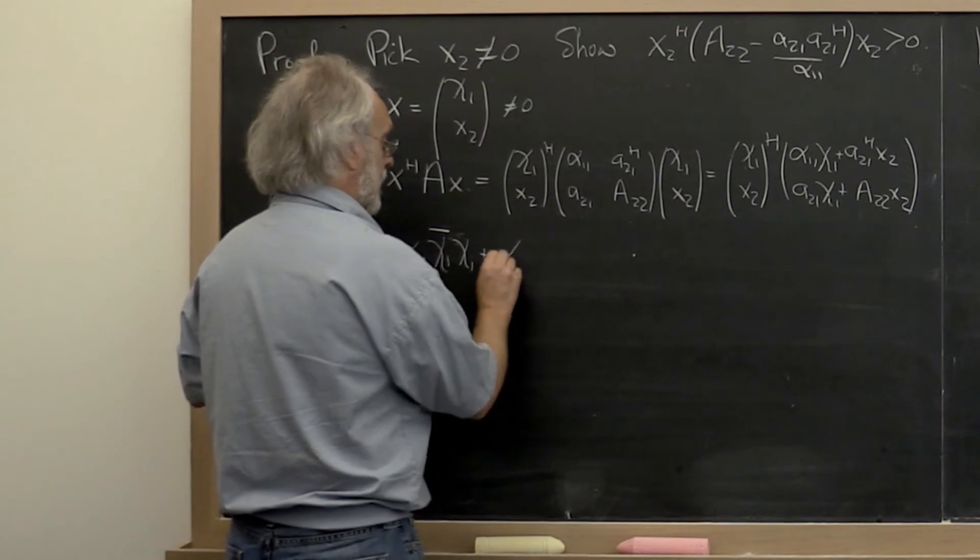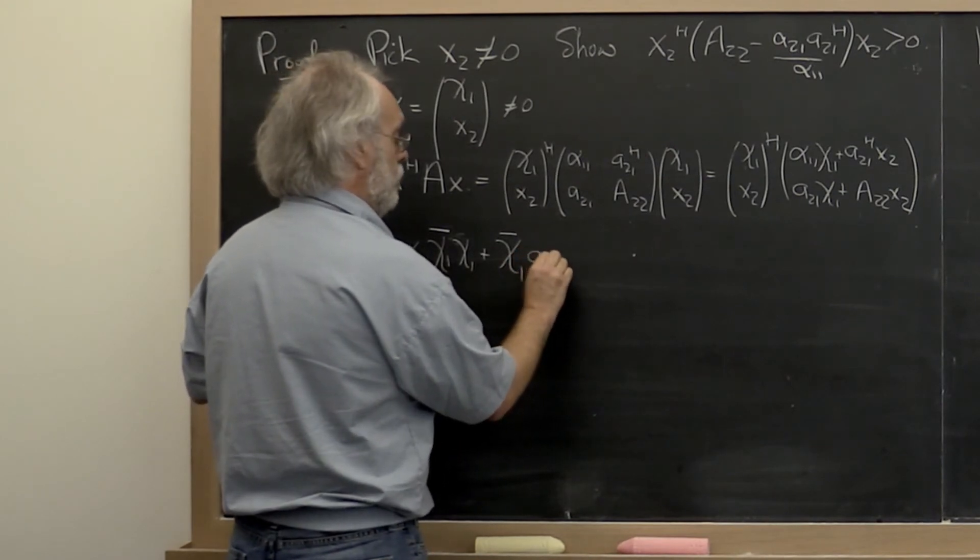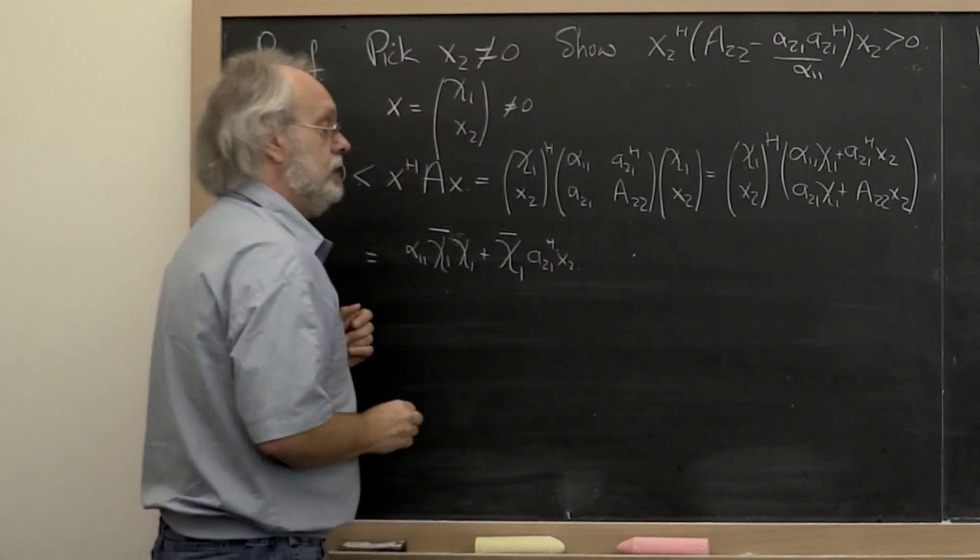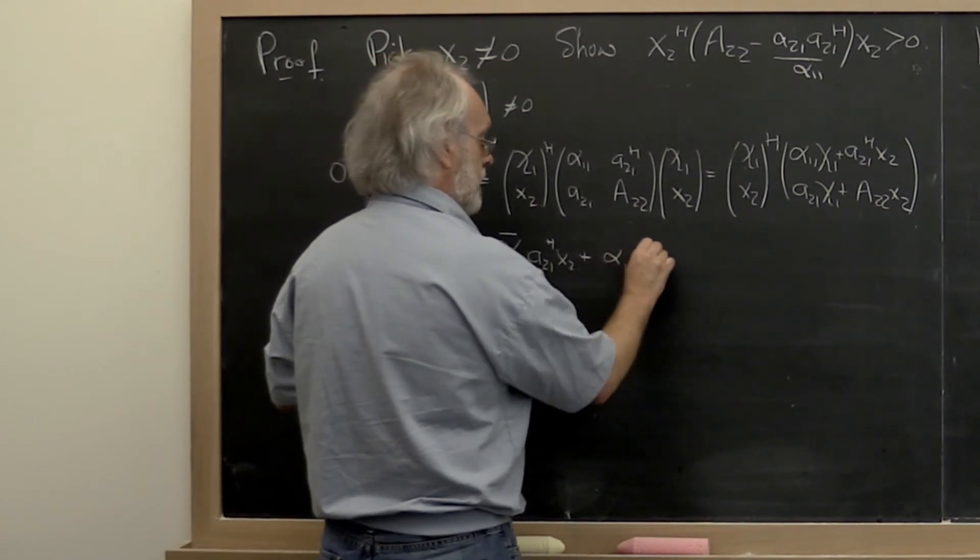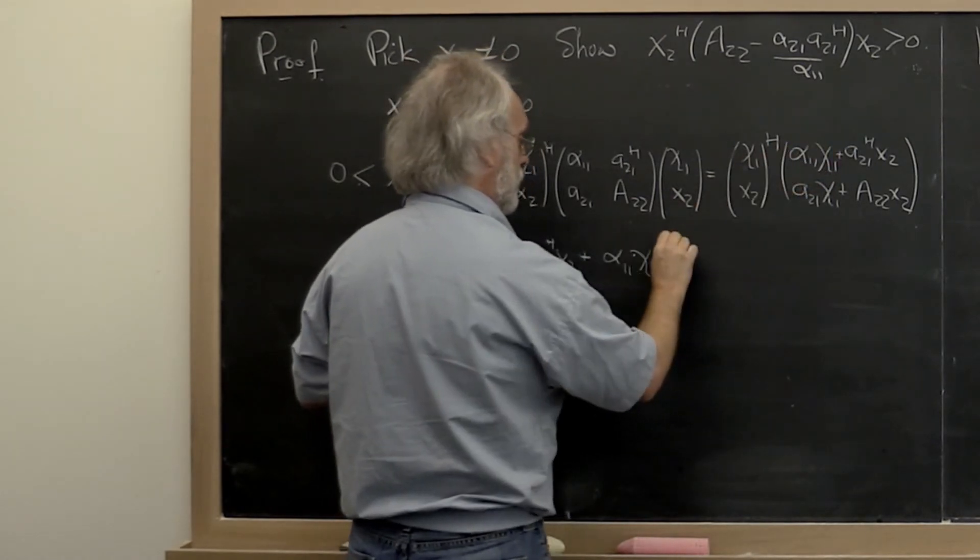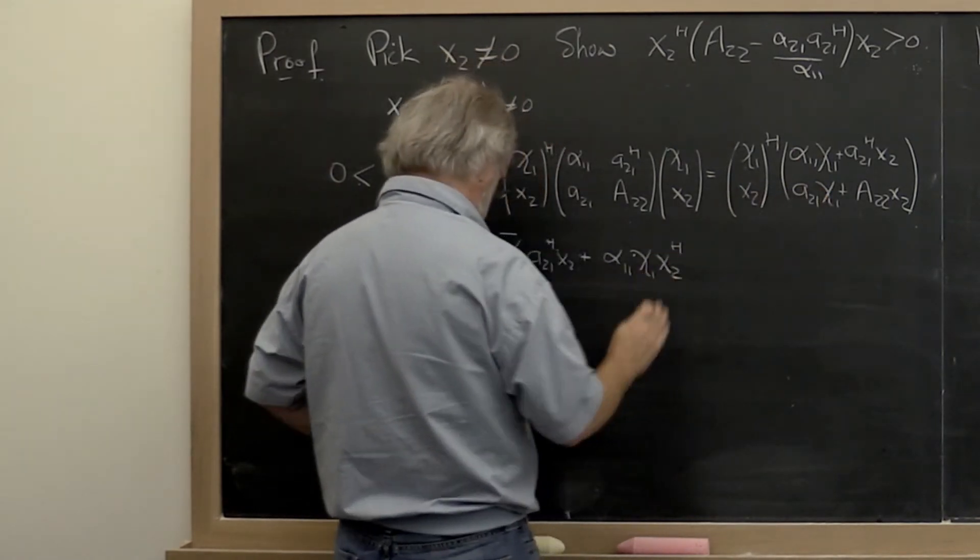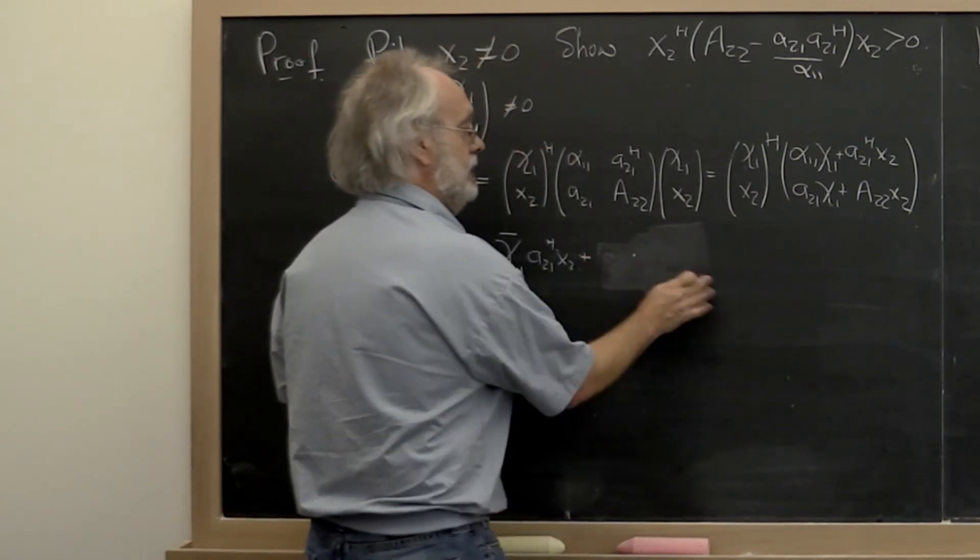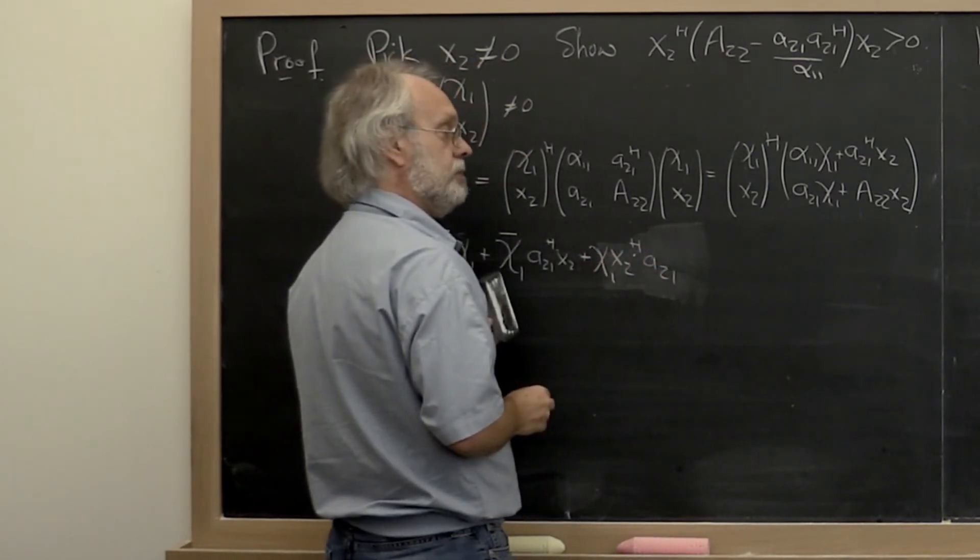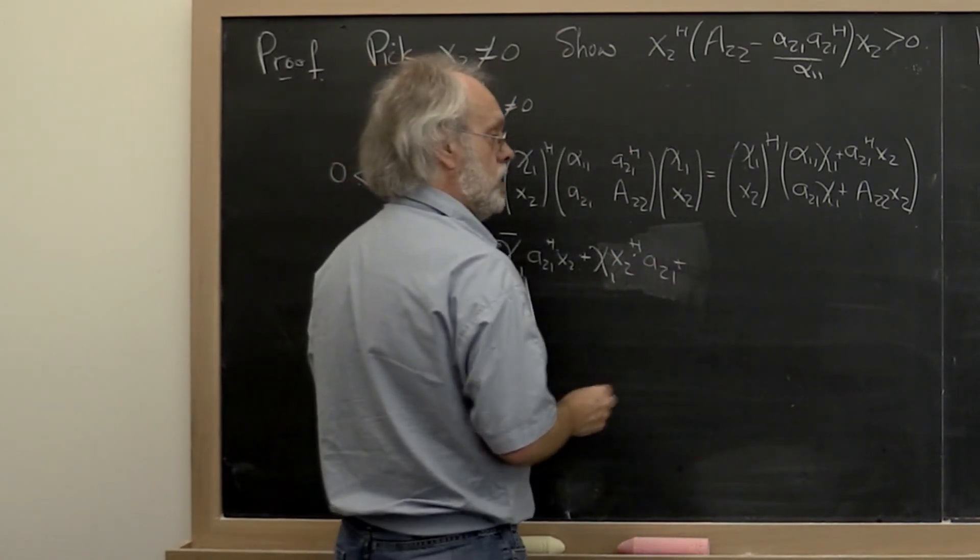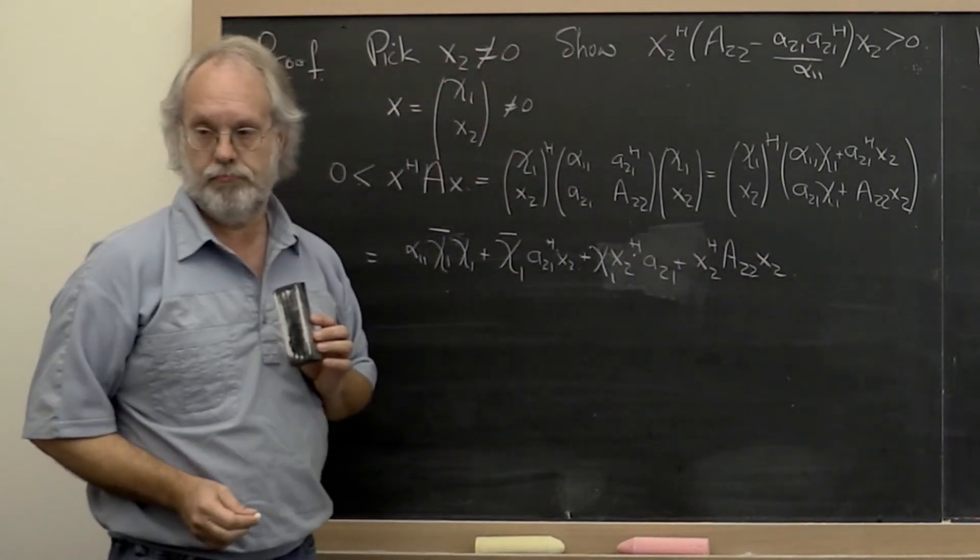Plus chi 1 conjugate times A 2 1 Hermitian times x2. Plus alpha 1 1 times chi 1 times x2. That's this times that with Hermitian on it. Wait a second. We need to do this times that. So we get x2 Hermitian A 2 1 and we can bring our chi 1 to the front. And then we can do x2 Hermitian A 2 2 times x2.